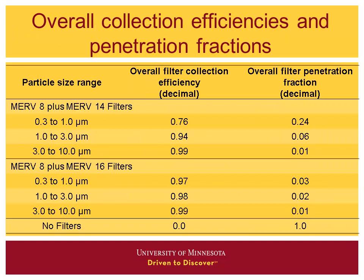Our overall collection efficiencies: MERV 14 collects only about 24% of the very small particles (0.3–1 micron), so 76% passes through. Collection efficiency at 1–3 microns is 0.94, and greater than 3 microns is 0.99. MERV 16 efficiencies are 0.97, 0.98, and 0.99 across those size ranges. We also ran cases without any filters to show that impact.